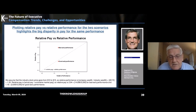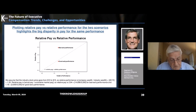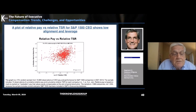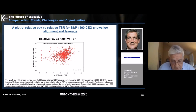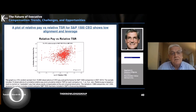We would anticipate from a graph like this that if this practice is widely followed, we're not going to get a very high correlation of relative pay and relative performance. And when we move to the next slide, we can see that's exactly what happens when we look at real data. This graph shows data for S&P 1500 CEOs, with relative pay on the vertical axis and relative performance on the horizontal axis.